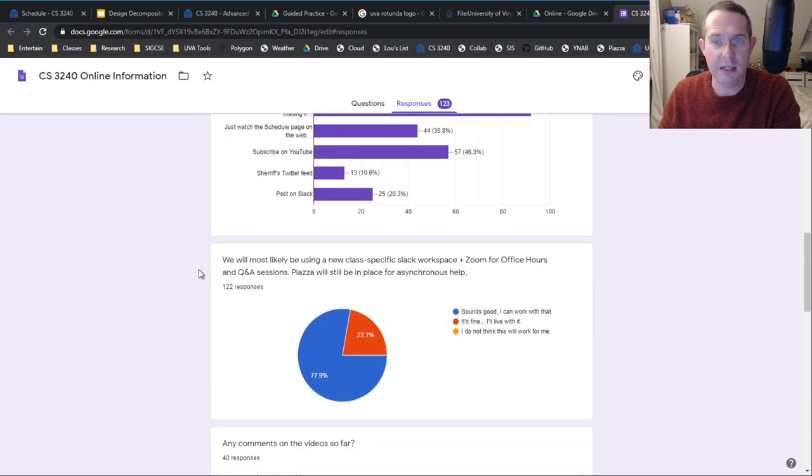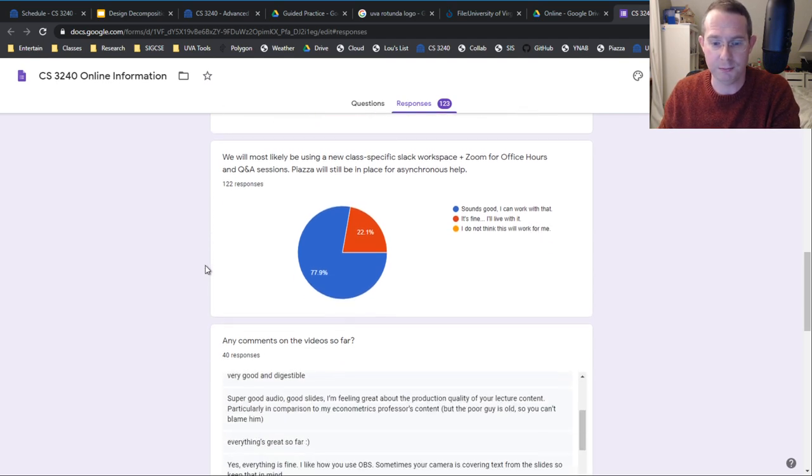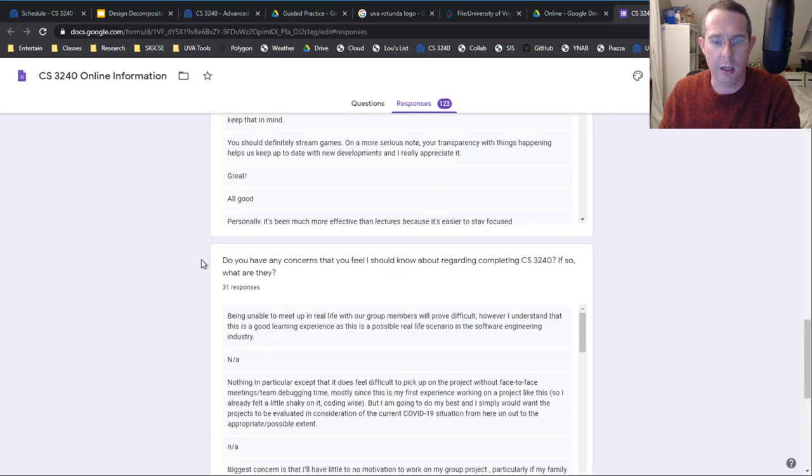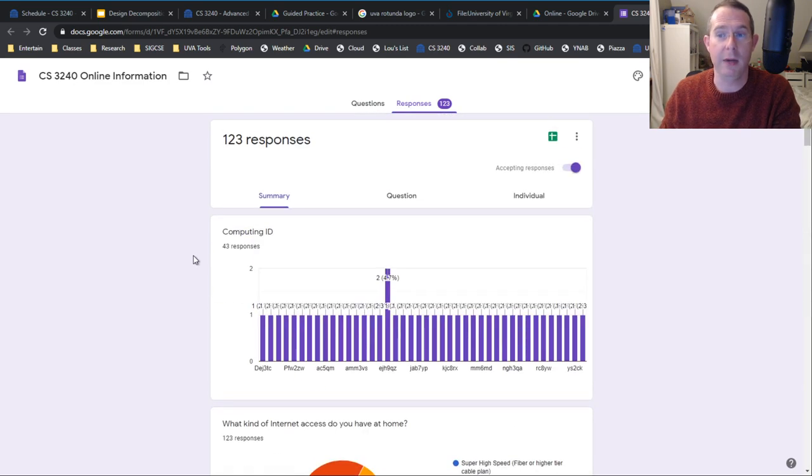Sounds like the office hour idea is going to work. I'm going to show you what that looks like in just a minute, because office hours are going to start pretty soon. And then, by far, by far, the number one comment that I got about a concern was people not working on the teams. So, I talked to the TAs about that, and I think we have some ideas about that, particularly in the context of the credit, no credit thing, and how that's going to work.